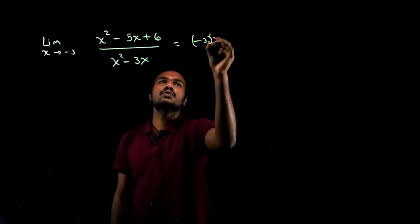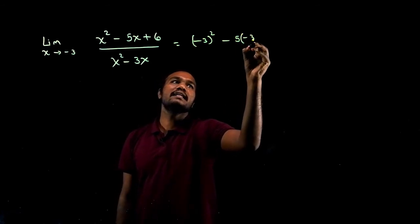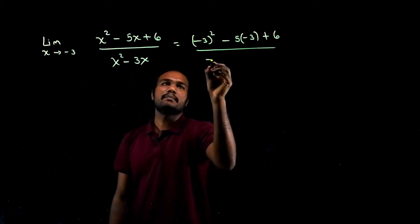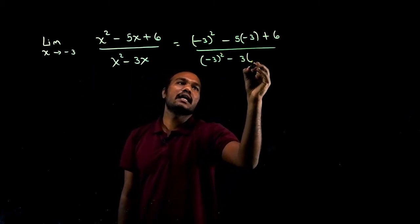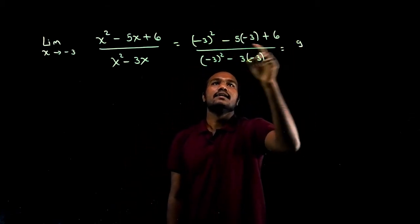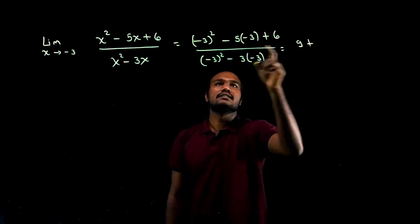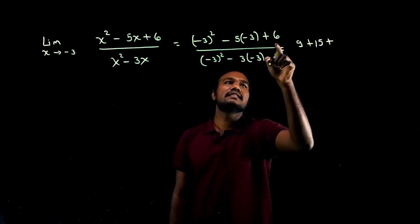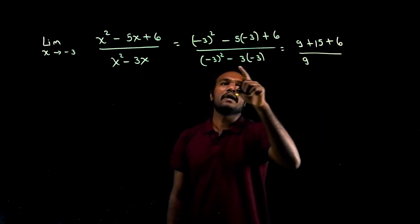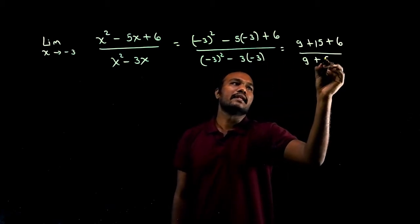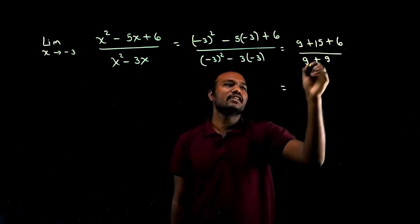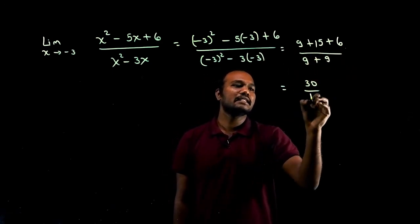So let's use it. Substituting x = -3: minus 3 whole squared minus 5 times minus 3 plus 6, divided by minus 3 whole squared minus 3 times minus 3. Minus 3 whole squared is 9, minus times minus is plus, 5 into 3 is 15. So we get 9 plus 15 plus 6 is 30, divided by 9 plus 9 is 18.